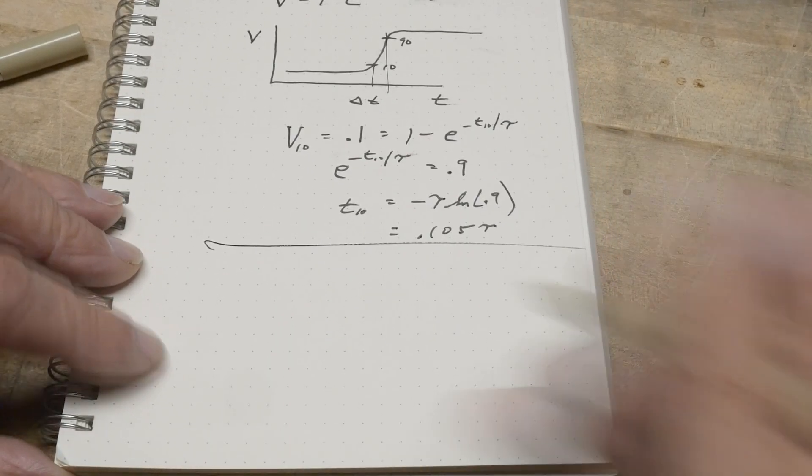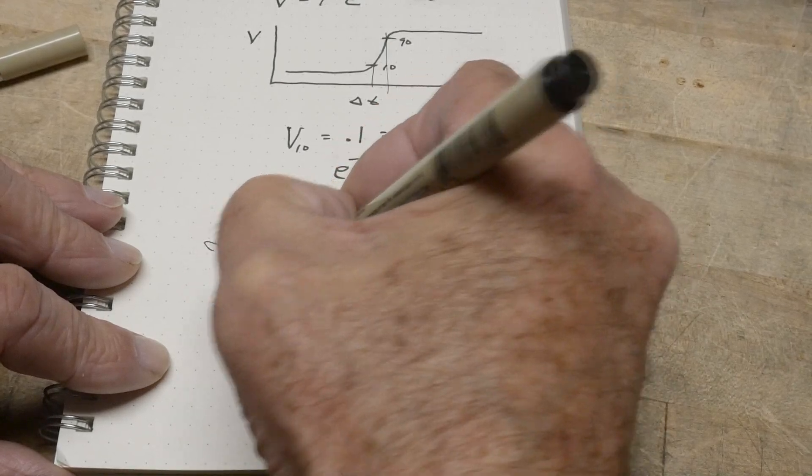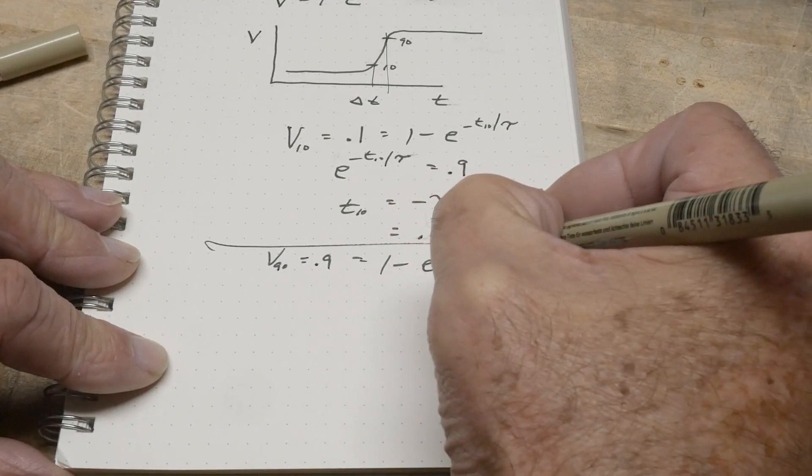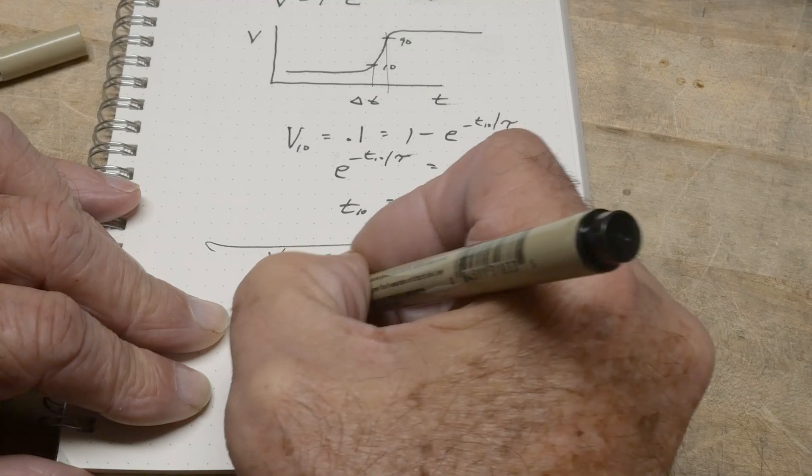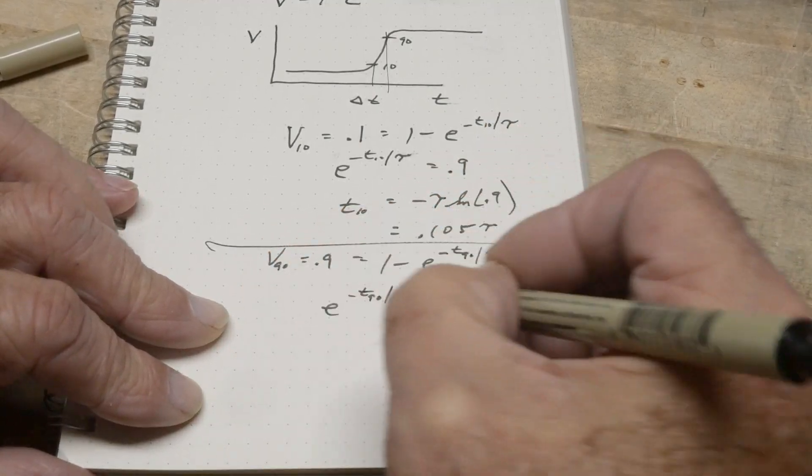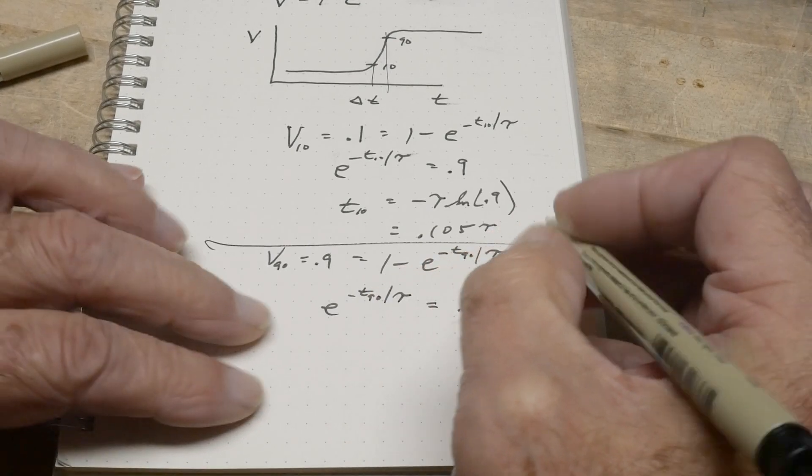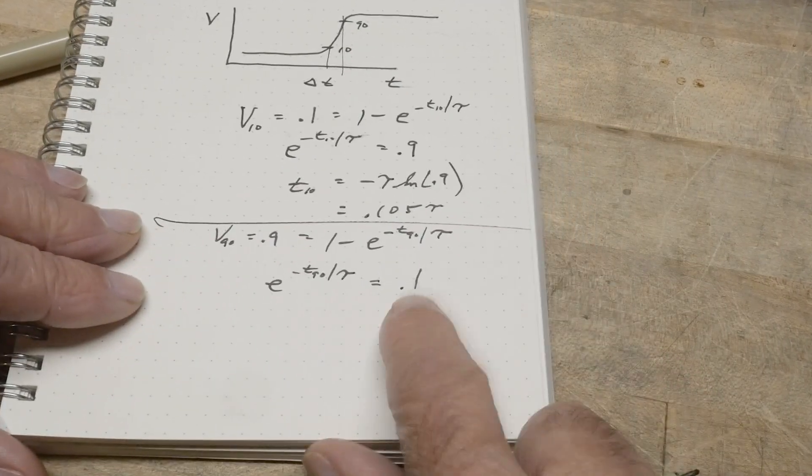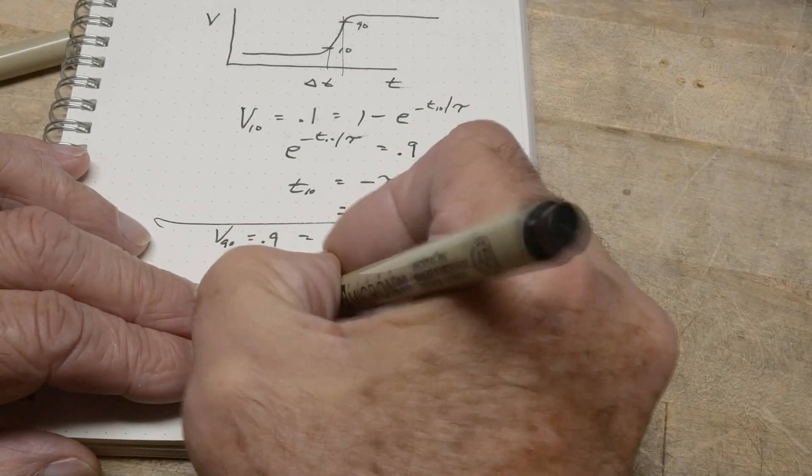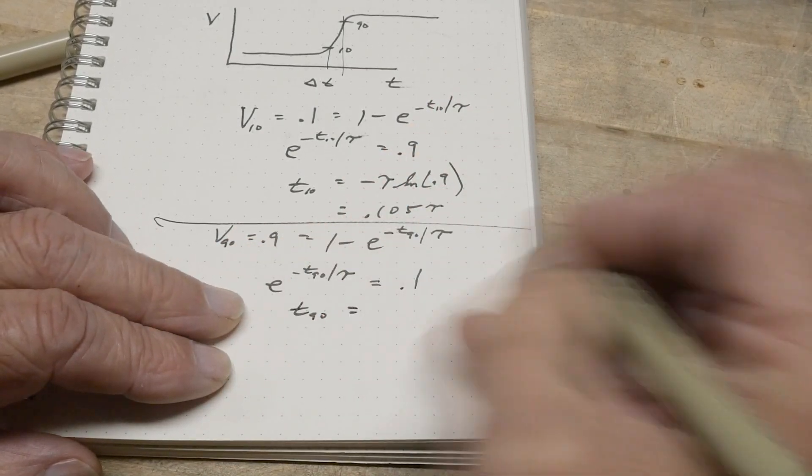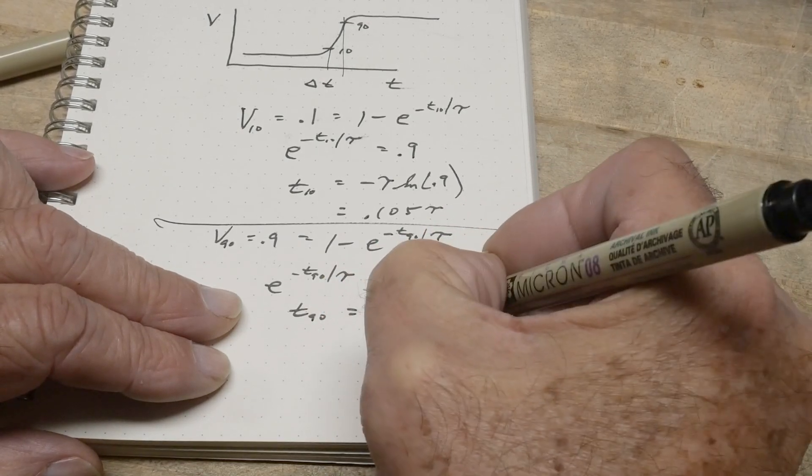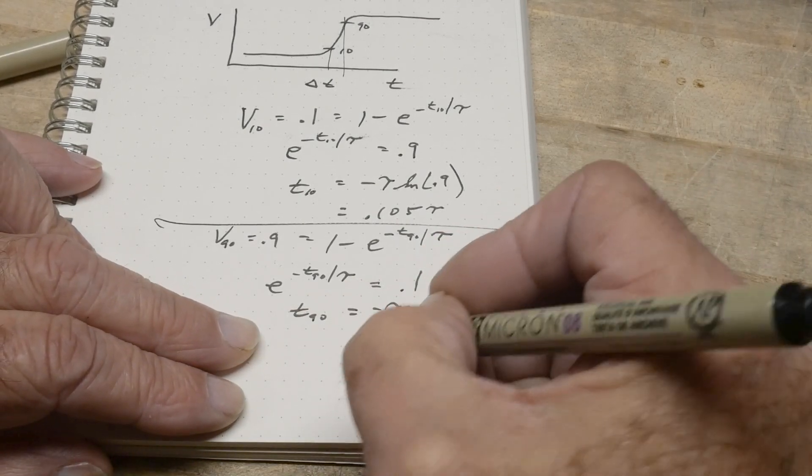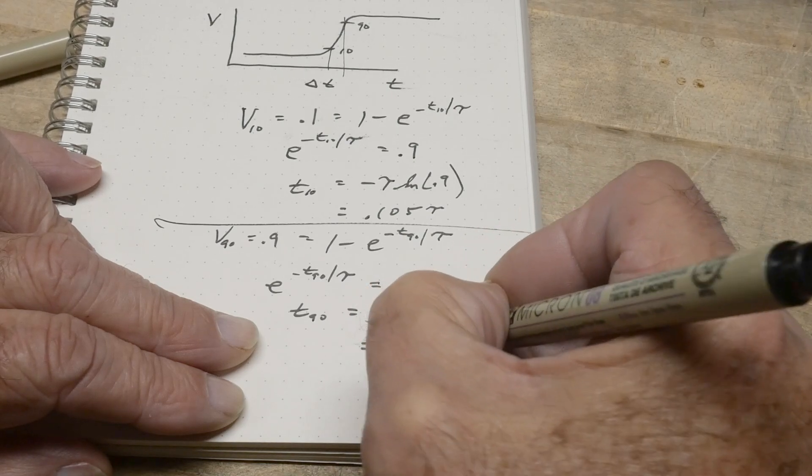All right. So now if we do it for the 90, that's equal to 0.9, and that's equal to 1 minus e to the minus t 90 divided by tau, and we get e to the minus t 90 over tau is going to be equal to 0.1. All right. 0.1, which is 1 minus 0.9. And then we end up being t 90 is going to be minus tau natural logarithm of 0.1 or, this is going to be 2.3 tau.